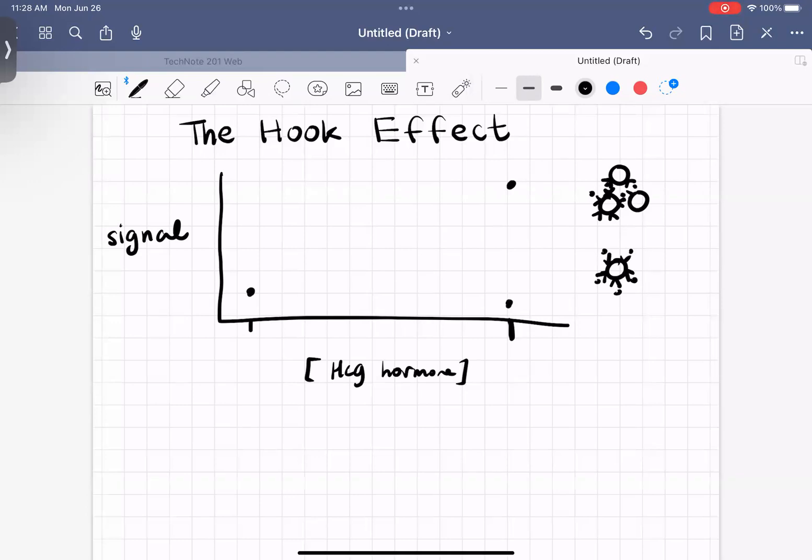So instead of having a linear graph like this, what you actually get in immunoassays typically is something more like this. And that's why it's called the hook effect, just because it hooks over. So let's go over into TechNote 201 to look at this in more detail.